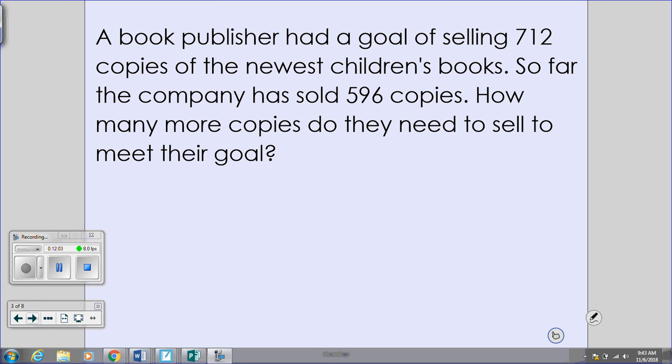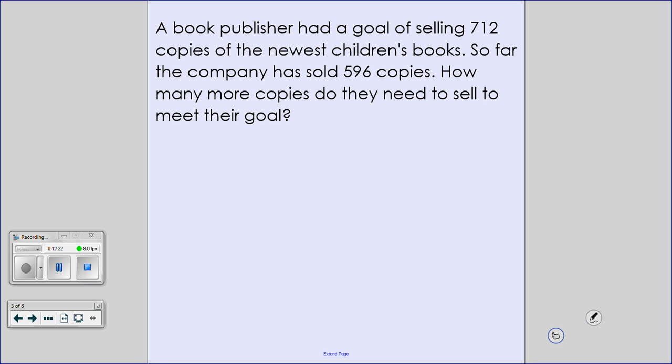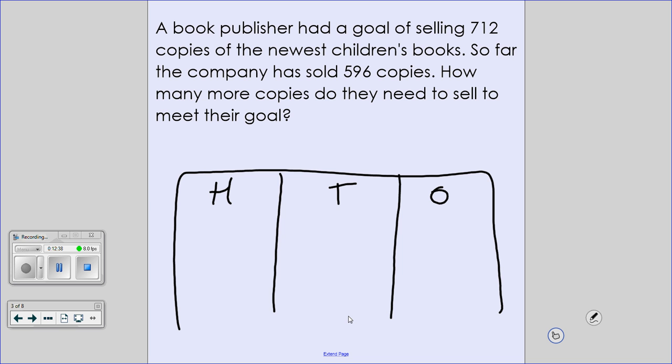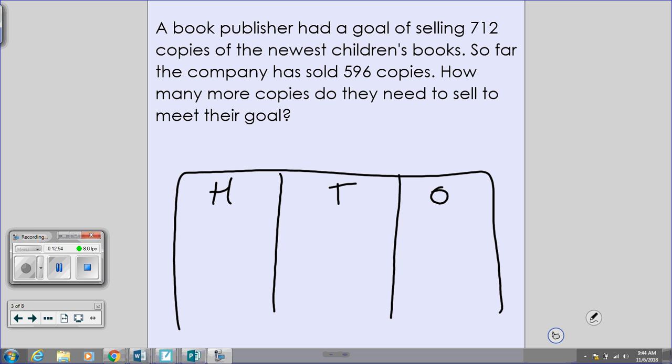We're going to do another problem, but we're going to do this one on our desk. Go ahead and just put your notebook in your desk. And let's go ahead and draw our base ten chart on our desk. Our word problem today reads: A book publisher had a goal of selling 712 copies of the newest children's books. So far, the company has sold 596 copies. How many more copies do they need to sell to meet their goal?